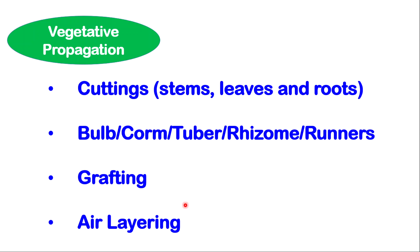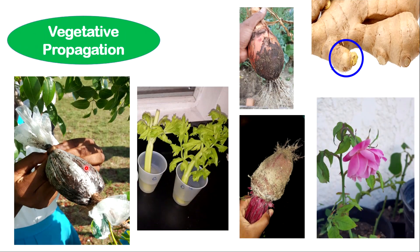We also have air layering. In air layering, moist soil is tied onto a piece of stem that was scraped — the bark and cambium were removed — and eventually roots will develop, so you can remove it and put it in the ground to get a new plant. We have cuttings, which is very popular among roses. We have tubers and corms or bulbs. For example, in ginger you have a rhizome, and you can see a new sprout growing from the tip; this piece can be removed to eventually get a new plant.